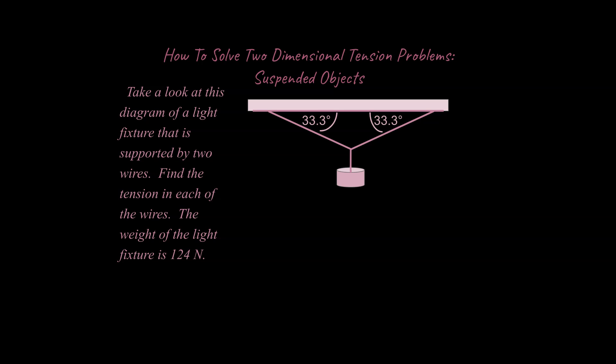Let's go ahead and take a look at this problem that I've made up based on some other problems I've seen. Take a look at this diagram of a light fixture that is supported by two wires. Find the tension in each of the wires. The weight of the light fixture is 124 newtons.